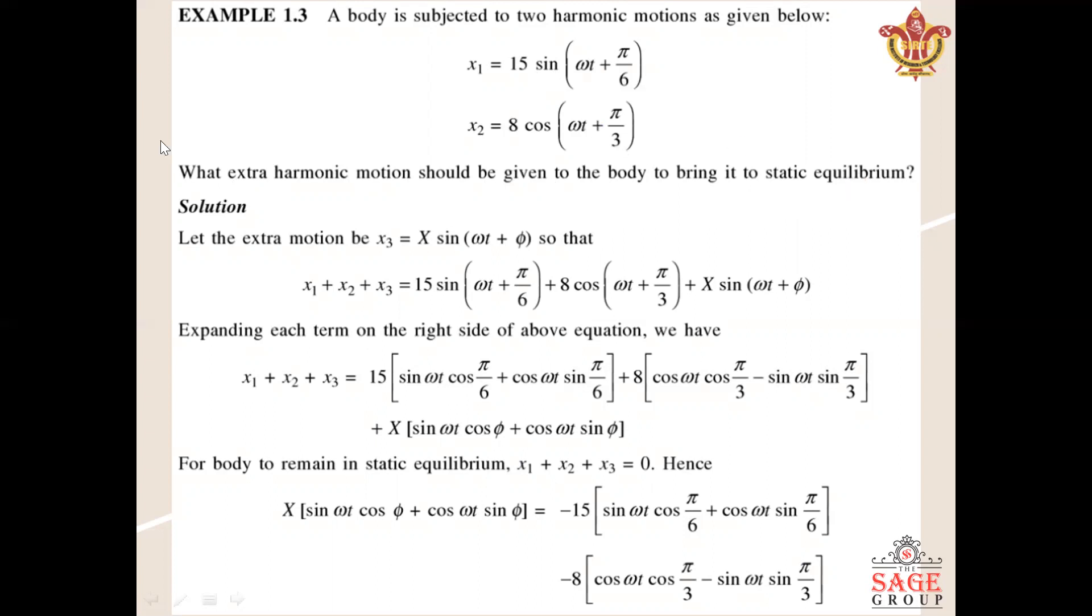We have to find the resultant motion. If we apply the resultant, the body will be in equilibrium or static equilibrium condition. Let the extra motion be x₃, which can be applied to balance these motions. This equals X sin(ωt + φ), where φ is the phase difference. Now x₃ will be added to x₁ and x₂, so the system will be in equilibrium position.